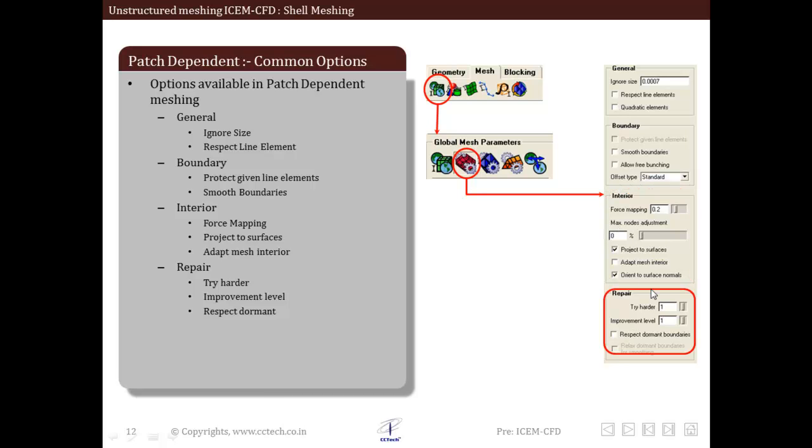Last are the repair options in which we have the try harder, improvement level, respect dormant boundaries option. We will also discuss these later. So what you should know is there are common options that are available in patch dependent meshing: the general options, the boundary related options, the interior related options, and the repair of the mesh options.